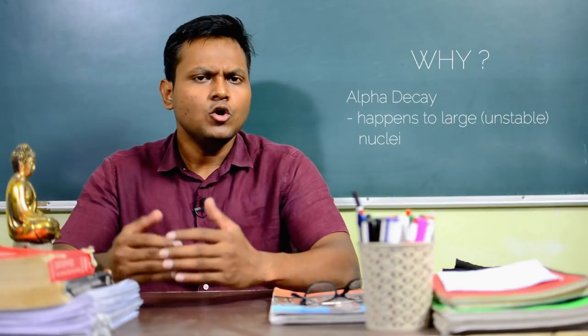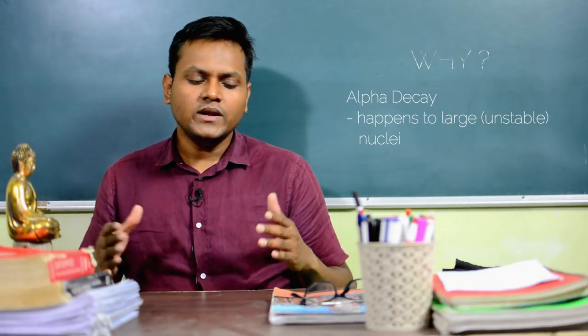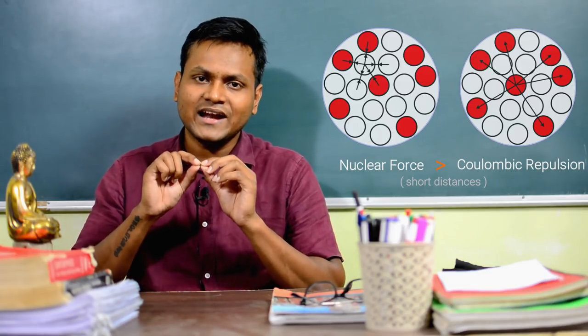Alpha decays happen for nuclei with mass number greater than 210. To understand why, we need to know about the nuclear force. The nucleus is held together by the nuclear force, but there is also Coulombic repulsion between proton pairs trying to break it apart. The nuclear force is much more powerful than Coulombic repulsion, but only at short distances — around one to three femtometers. For small or mid-range nuclei, nucleons are attracted to their nearest neighbors via the nuclear force, easily dominating over Coulombic repulsion.